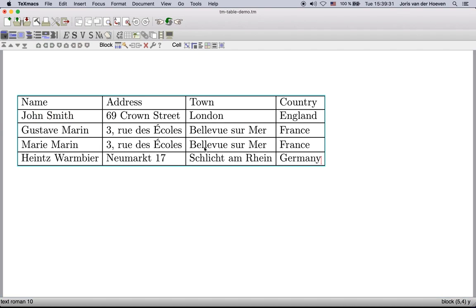The global table properties can be modified using the icons in this icon group. One important such property is the width of the entire table. You may use the following toggle to let your table span over the entire line. We will come back later to more advanced table properties.